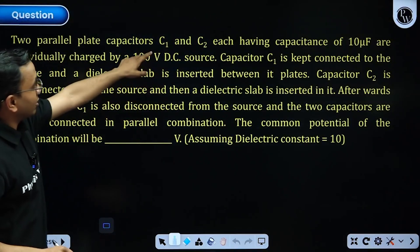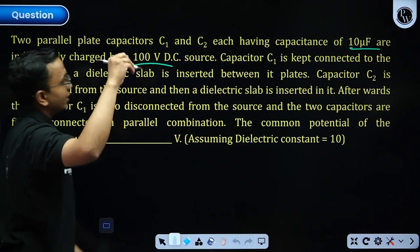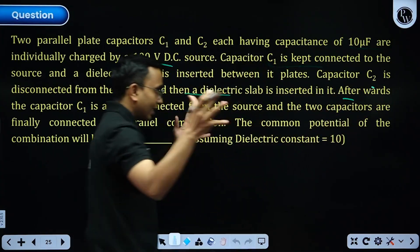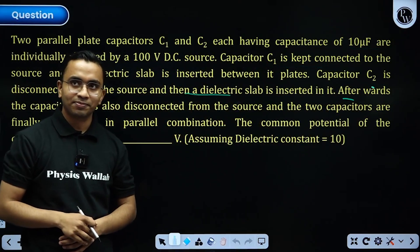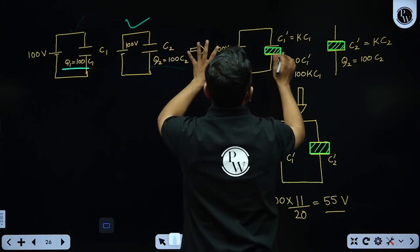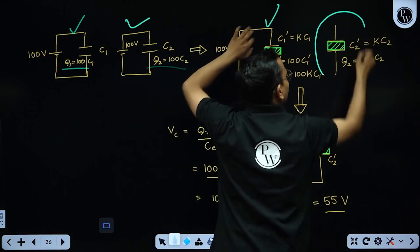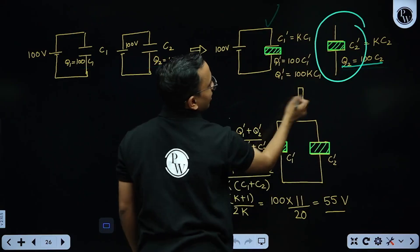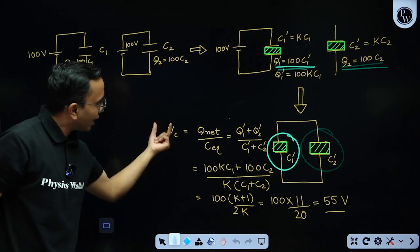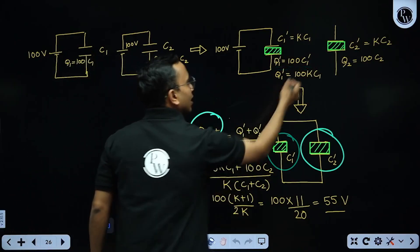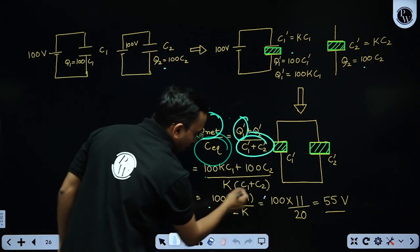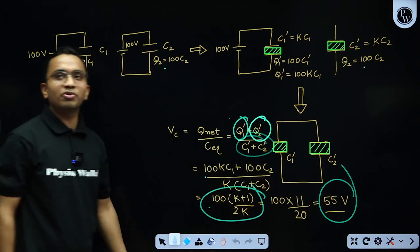Next question: two capacitors C1 and C2 = 10 µF are individually charged to 100 V. C1 remains connected to the battery and a dielectric (K = 10) is inserted, so its charge changes. C2 is disconnected, then the dielectric is inserted, so its charge stays the same. When connected in parallel, the common potential V = (Q1' + Q2') / (C1' + C2'). Substituting values gives V_common = 55 V.